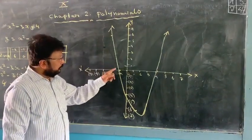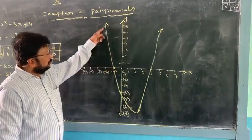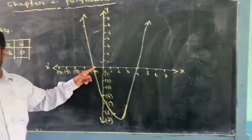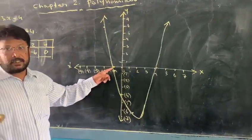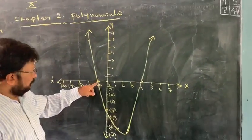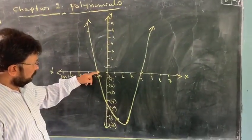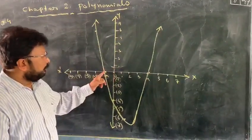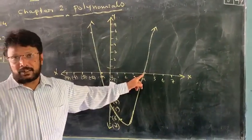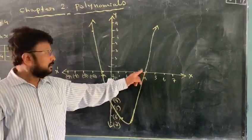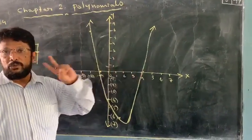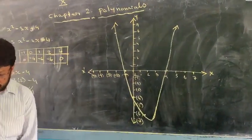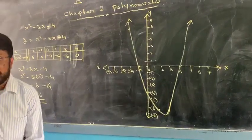In this parabolic graph, you can see that the graph intersects the x-axis in two distinct points — one here and another one here. So in how many places will it intersect? Two. So there will be two values, and the answer will be two.